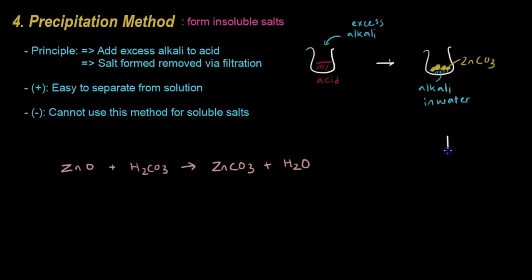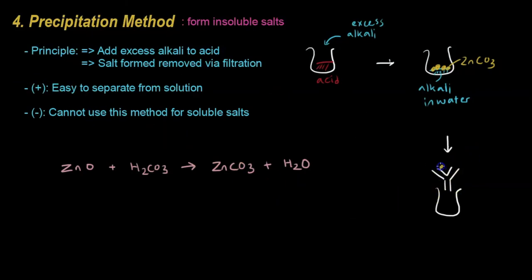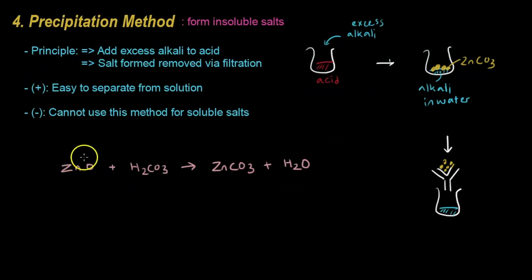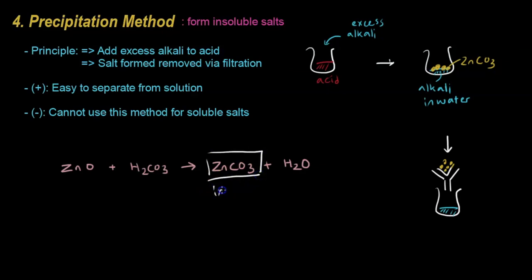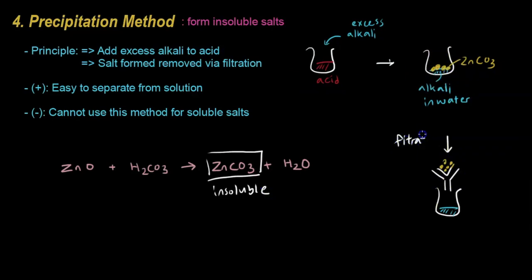You simply filter off the insoluble solid, and all the liquid washes through — you've separated them. The zinc chloride solids remain on the filter paper. One example: zinc oxide reacting with carbonic acid gives zinc carbonate, which is insoluble and can be removed via filtration to give you the zinc carbonate solid. It's very simple.